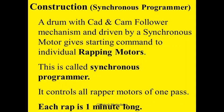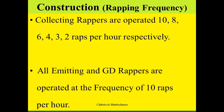For sequential wrapping, a drum with a cam follower driven by a synchronous motor gives starting commands to individual wrapping motors. This is called a synchronous programmer; it controls all the wrapper motors of one pass. Each wrap is one minute long. Collecting wrappers are operated at a sequence of 10, 8, 6, 4, 3, 2 wraps per hour respectively, while emitting wrappers and gas distribution plate wrappers are operated at a frequency of 10 wraps per hour.